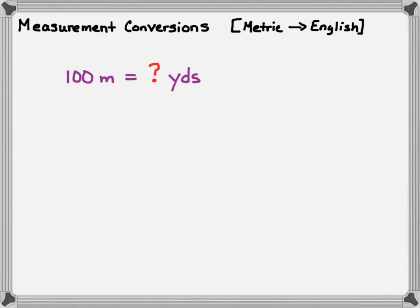The first one: I have 100 meters and I want to convert this to yards. So the question is, 100 meters is equal to how many yards? I set up my problem as 100 meters times — putting meters on the bottom and yards on the top. I need a conversion factor, and looking it up in the textbook it says 1 meter is equal to 1.09 yards. So this is my conversion factor.